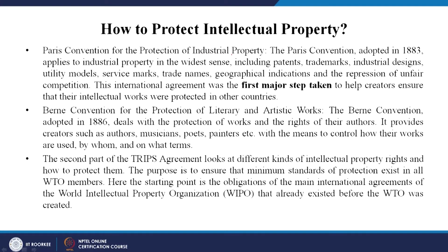The TRIPS agreement started with an objective to protect intellectual knowledge and intellectual developments. To protect intellectual property, the Paris Convention for the Protection of Industrial Property — adopted in 1883 — was the first major step. It applies to industrial property in the widest sense, including patents, trademarks, industrial designs, models, trade names, geographical indications, and repression of unfair competition. This was the first major step to help creators ensure their intellectual works were protected in other countries.